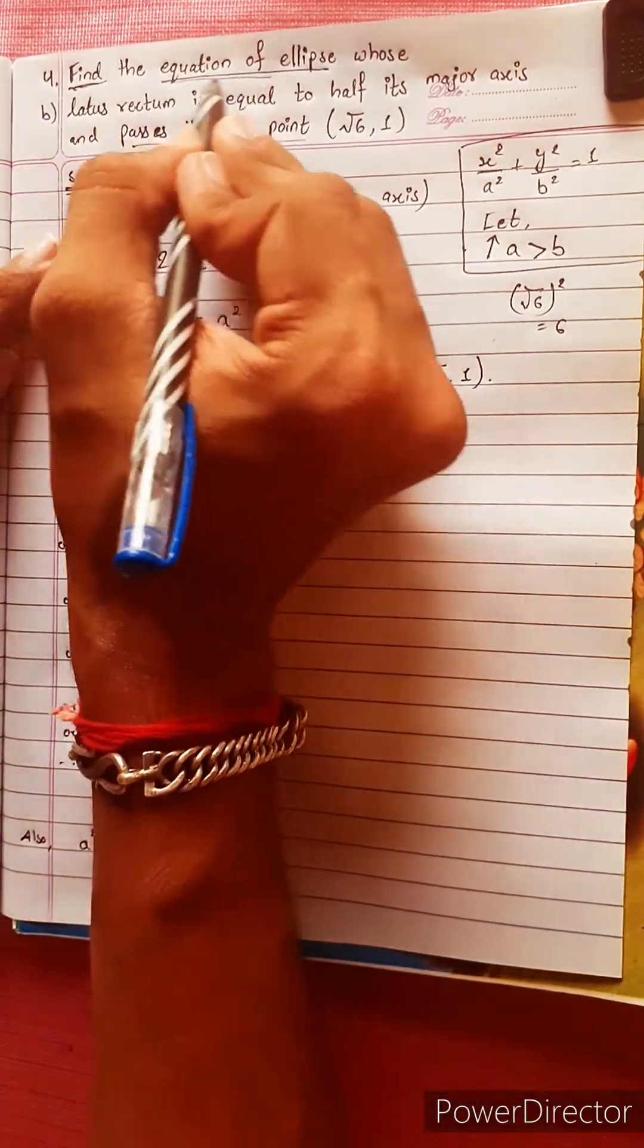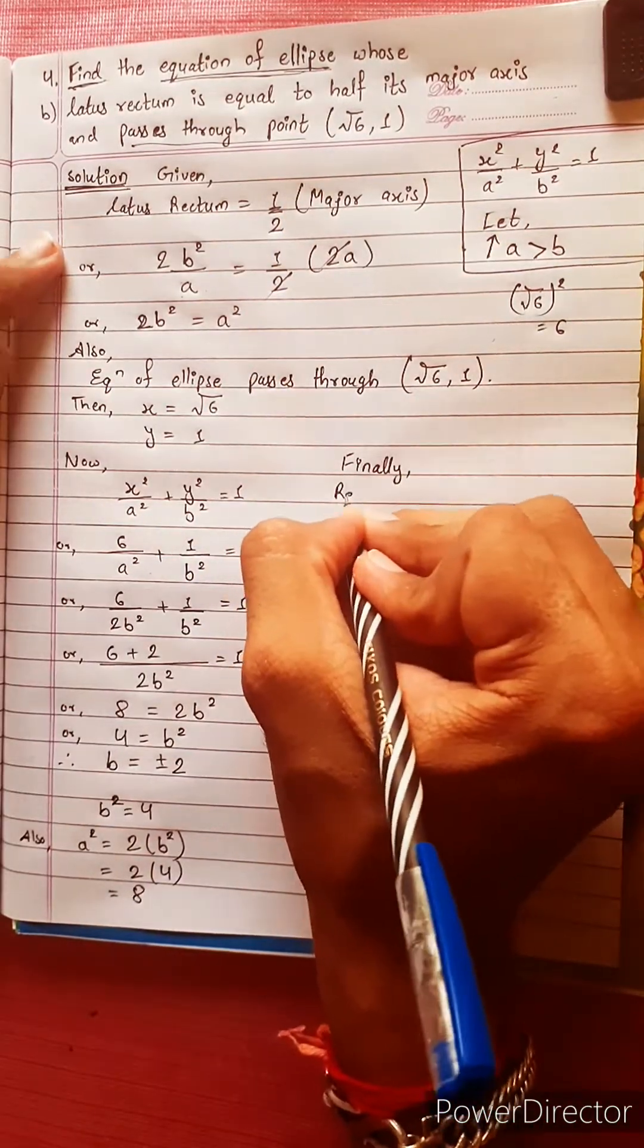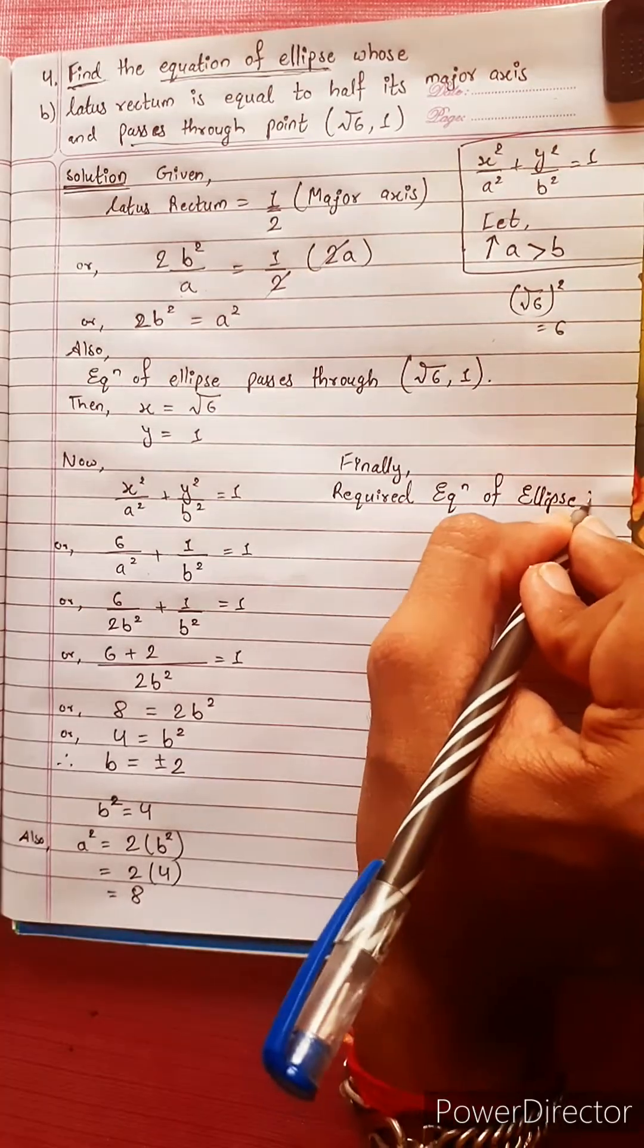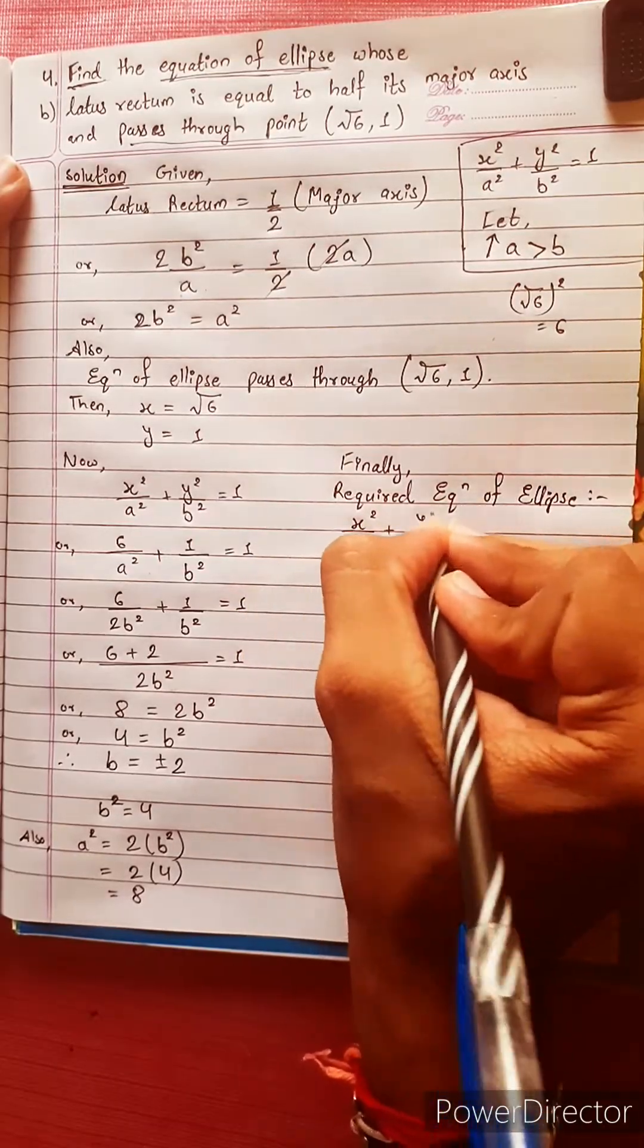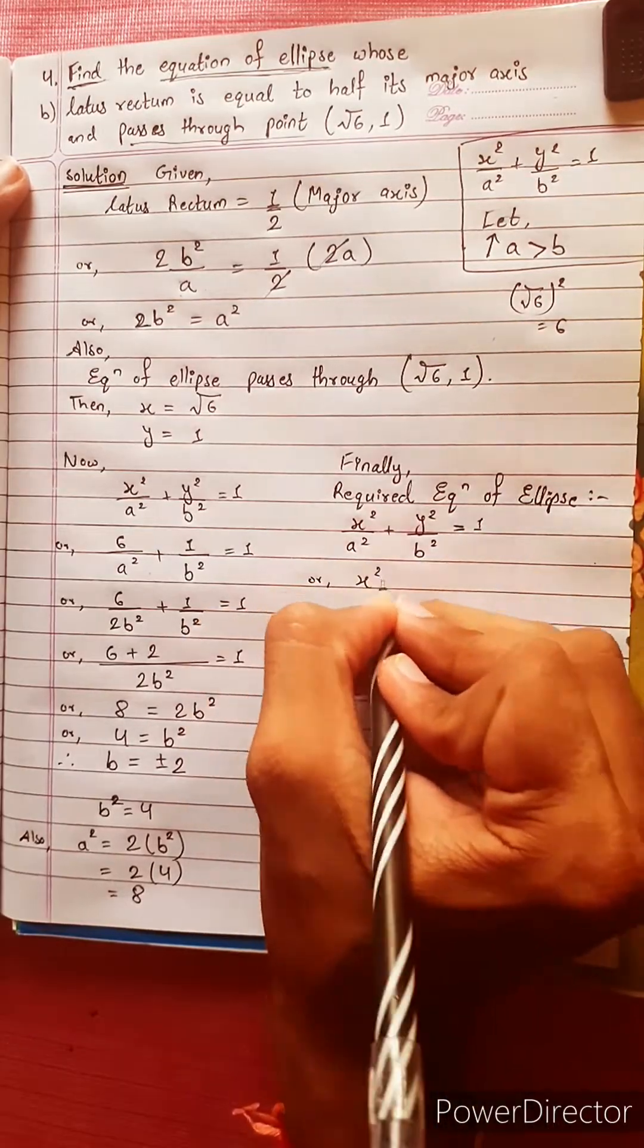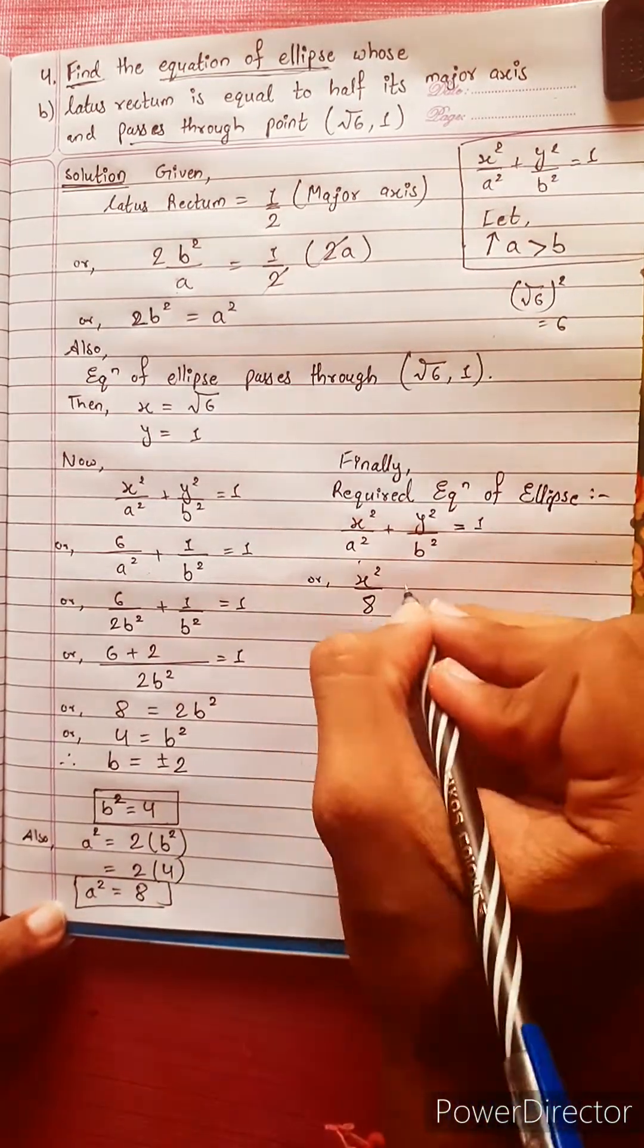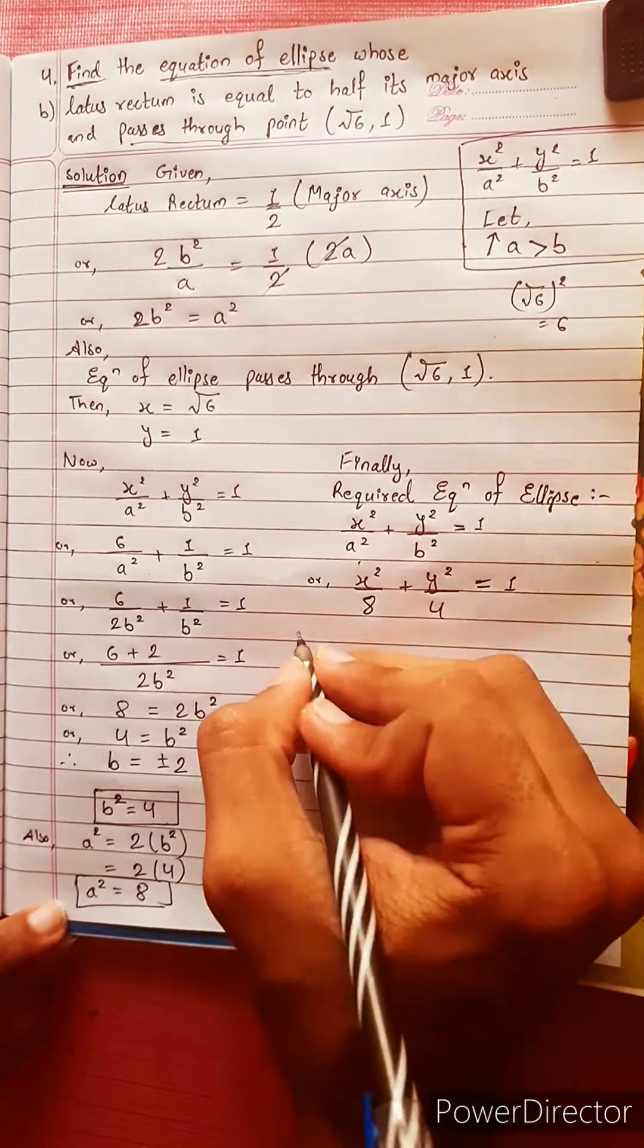Now, I'm going to show you how to find the equation of ellipse. Finally, we found the required equation of ellipse: x² by a² plus y² by b² equals to 1. Or x² by 8 plus y² by 4 equals to 1.